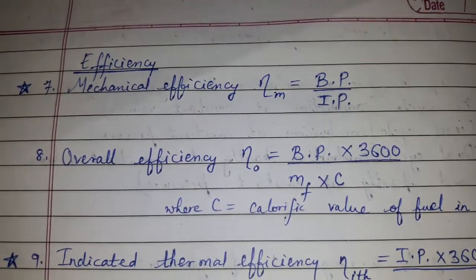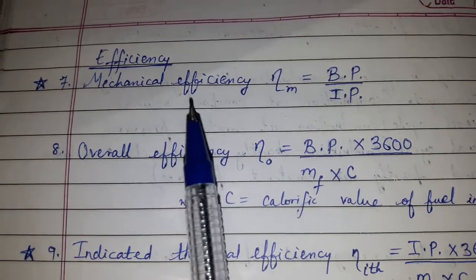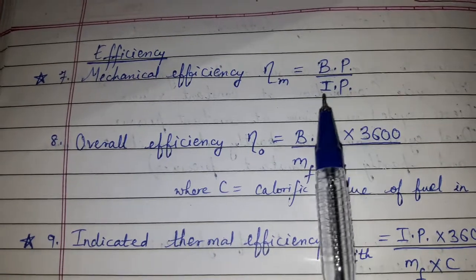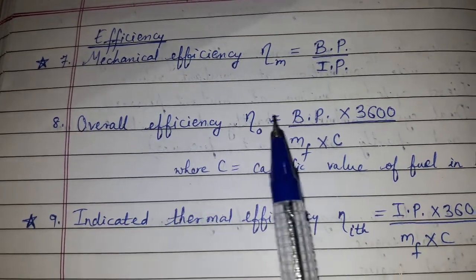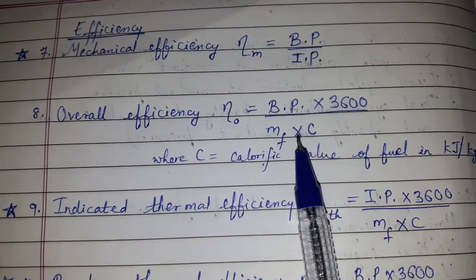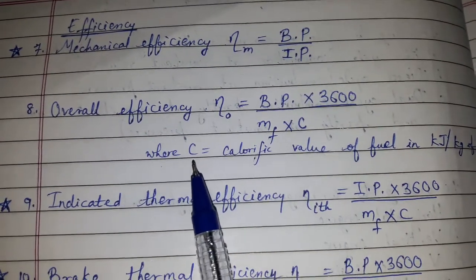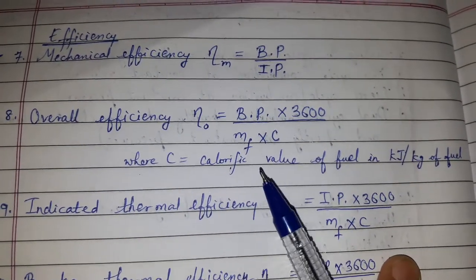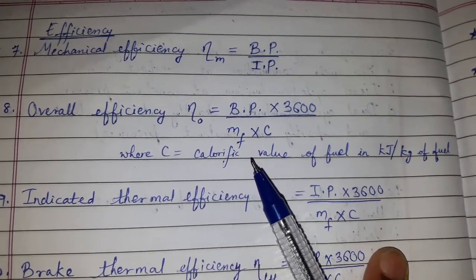Now the formulas for efficiency. Mechanical efficiency is equal to BP upon IP. Overall efficiency is equal to BP × 3600 upon Mf × C where C is the calorific value of the fuel in kilojoule per kg of fuel.